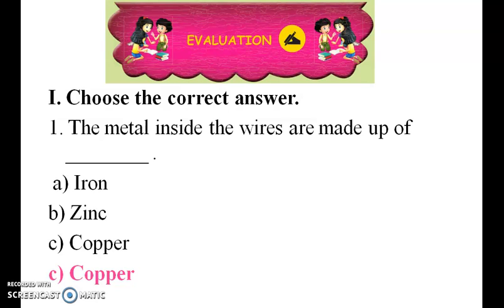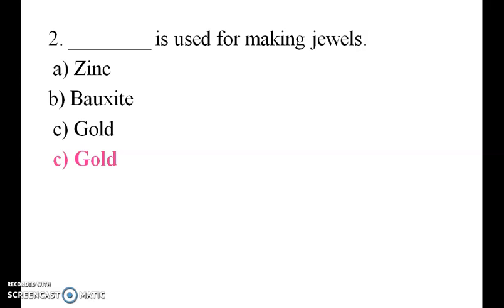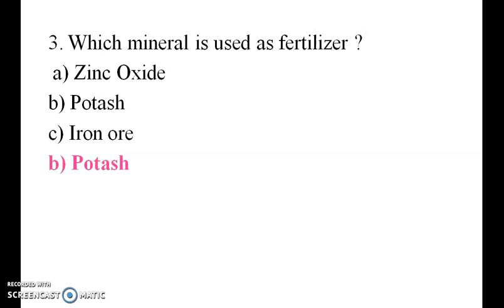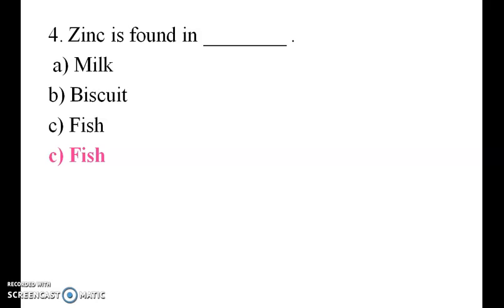Copper is used for making jewels — no, that would be gold. Gold is used for gold ornaments. Which mineral is used as fertilizer: zinc oxide, potash, or iron? Potash is the correct answer. Zinc is found in milk, biscuit, or fish — the answer is fish.